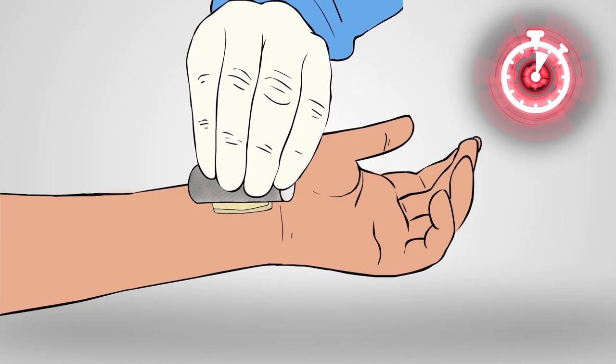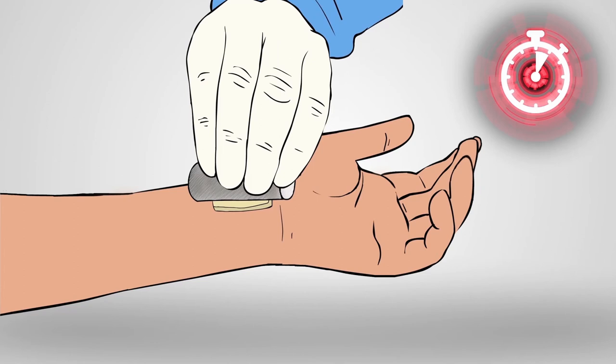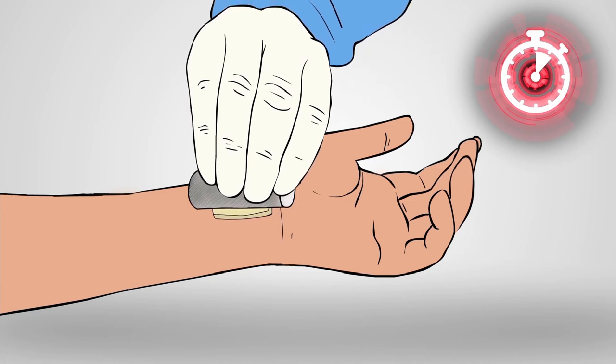Now release pressure and without lifting Axiostat, observe for peripheral bleeding or hematoma formation. If required, apply pressure for an additional 2 minutes and repeat the process.